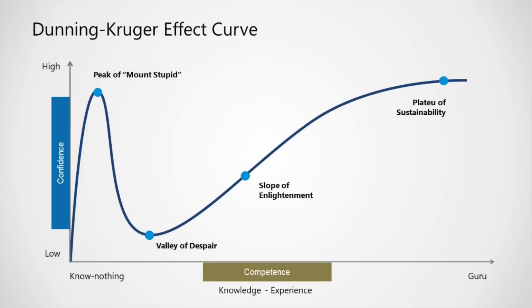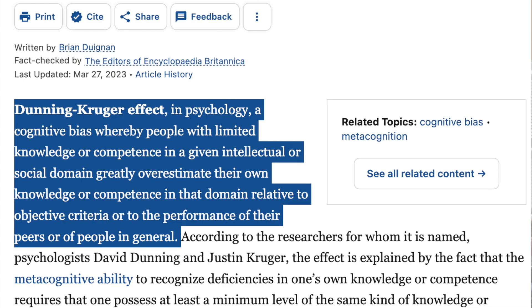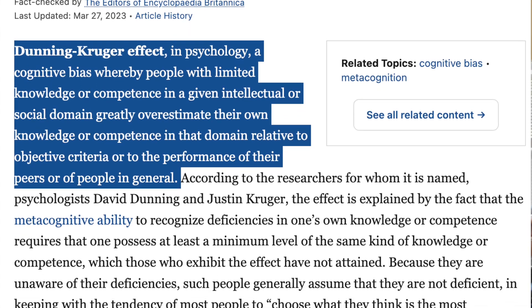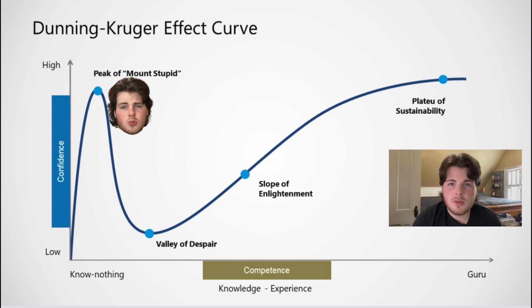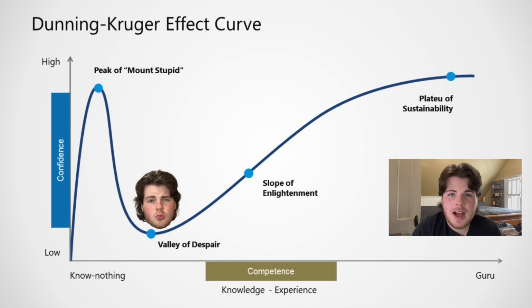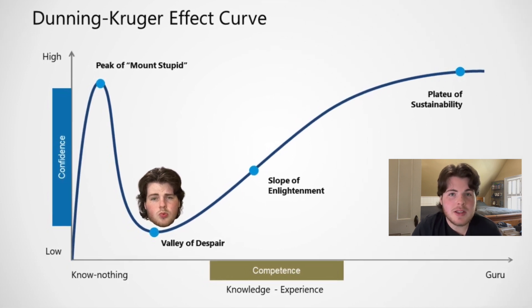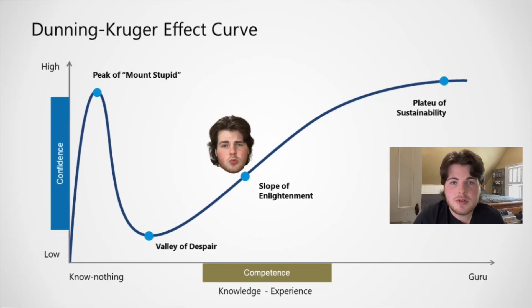This can be shown in the Dunning-Kruger effect. People tend to be extremely overconfident in their knowledge of a subject when in reality they don't know anything. The Dunning-Kruger curve was made by social psychologists David Dunning and Justin Kruger based on confidence versus competence. Personally, I was on top of Mount Stupid when I first got into investing — I thought it was a lot easier before I actually did any research.